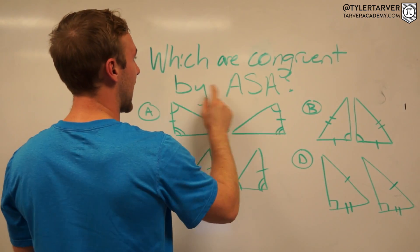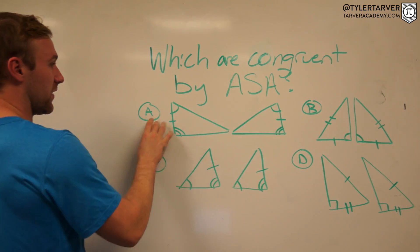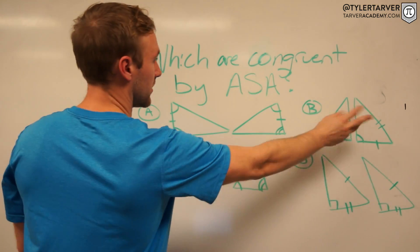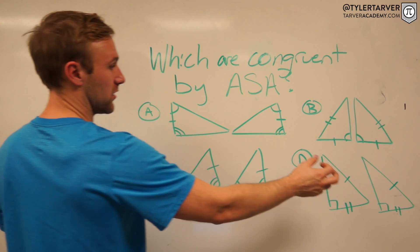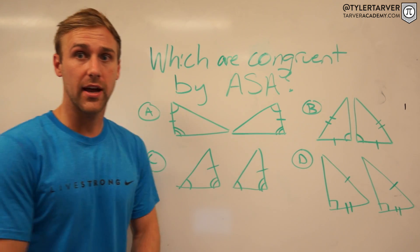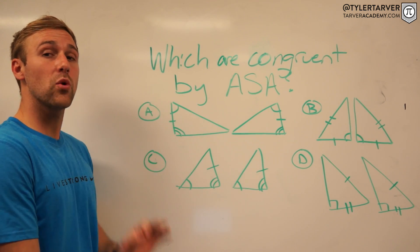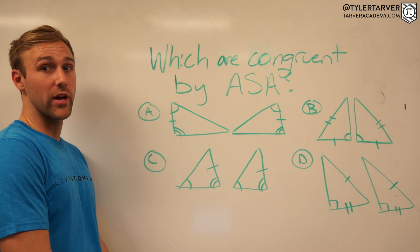Which are congruent by ASA? I've got this one with these two triangles, those two triangles, those two triangles, and those two triangles. Okay, go pause it and then work the problem. I'll wait here.